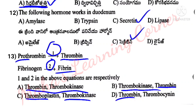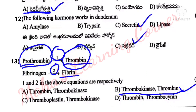Options: C. Thromboplastin/Thrombokinase, D. Thrombin/Thrombocynin. Correct answer: Option B is the correct answer. When blood flows out, an enzyme called thrombokinase is released. Thrombokinase acts on prothrombin, converting it to thrombin. Thrombin then acts on fibrinogen, converting it from a dissolved state into insoluble fibrin. These fibrin fibers attach to edges of the wound, pulling them together.